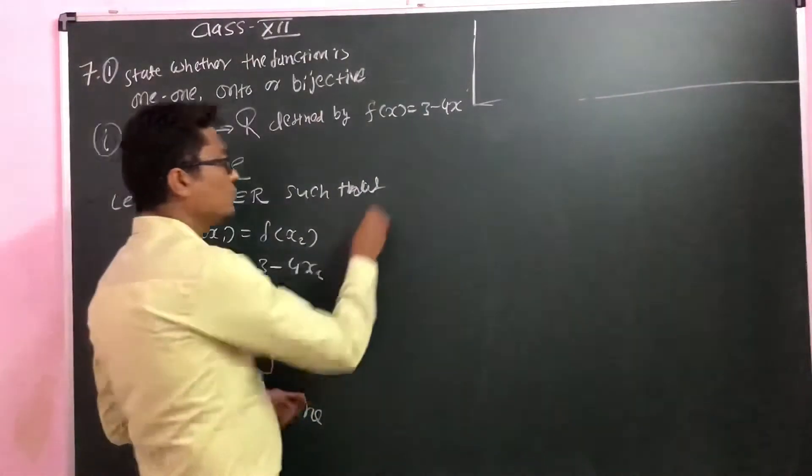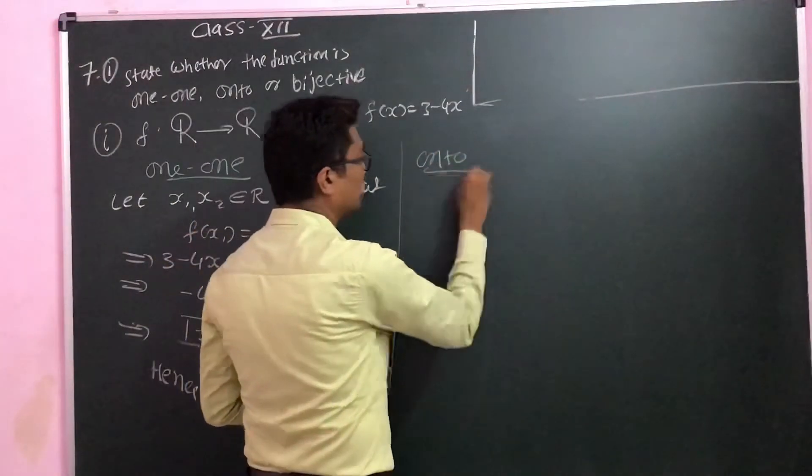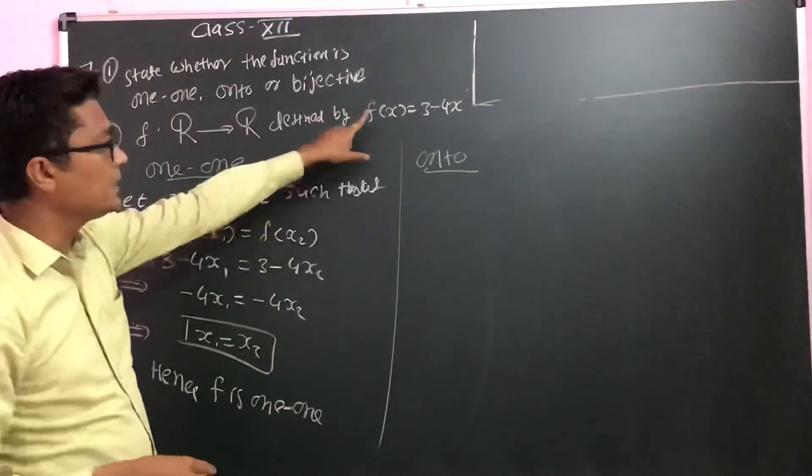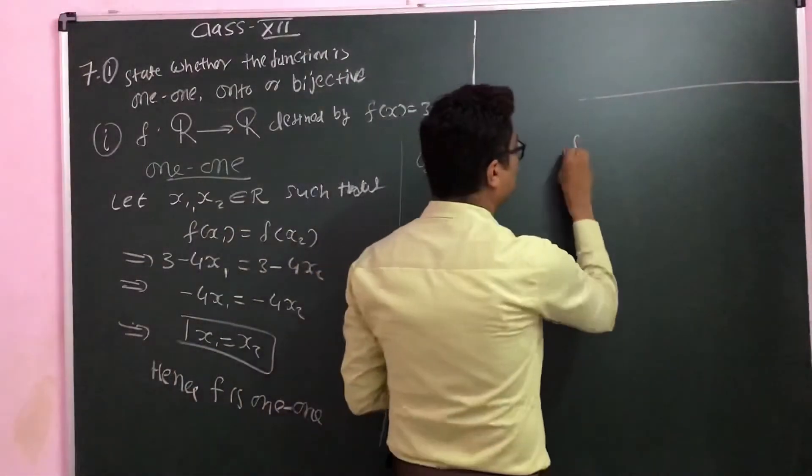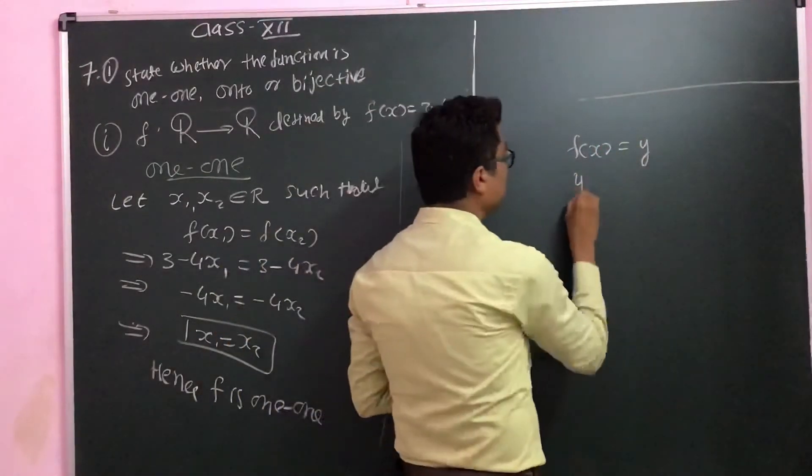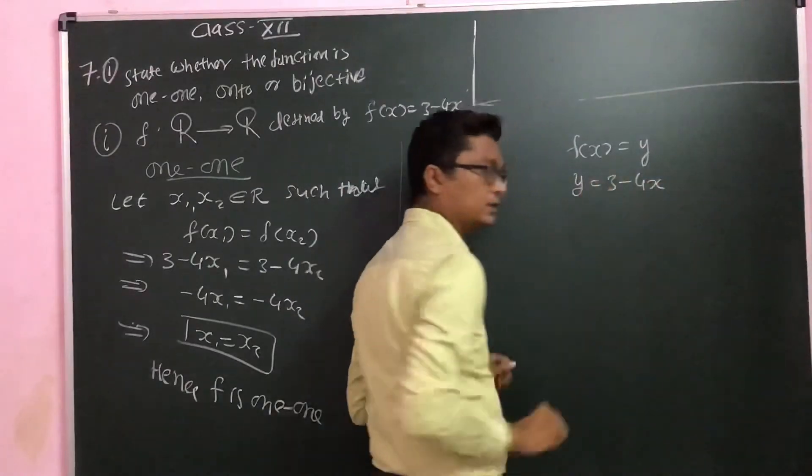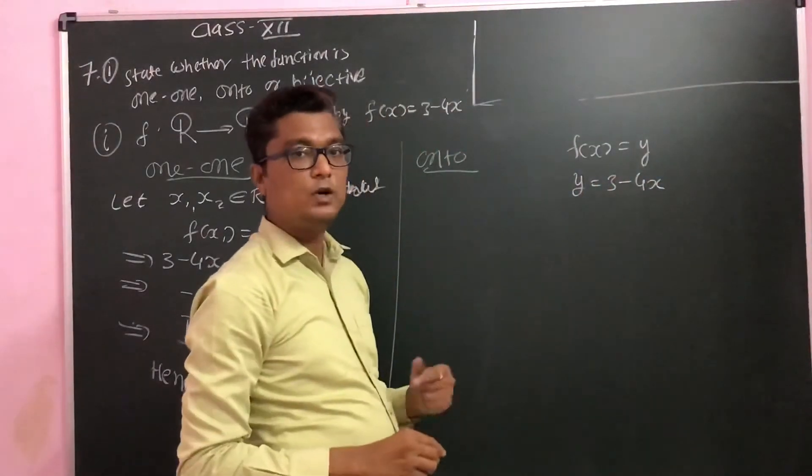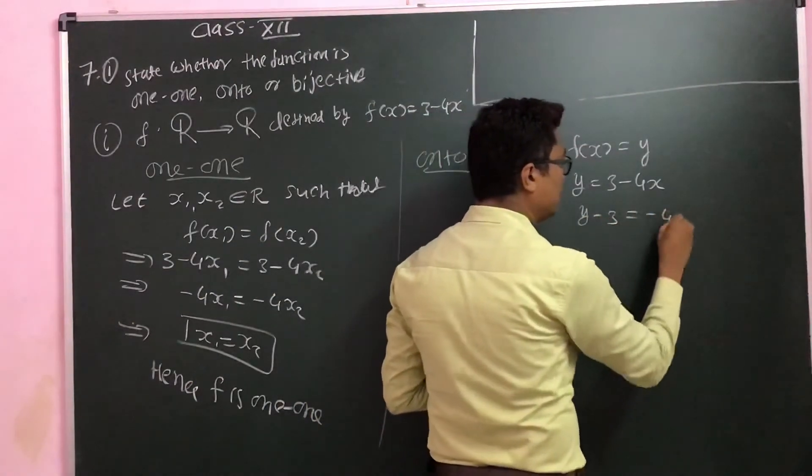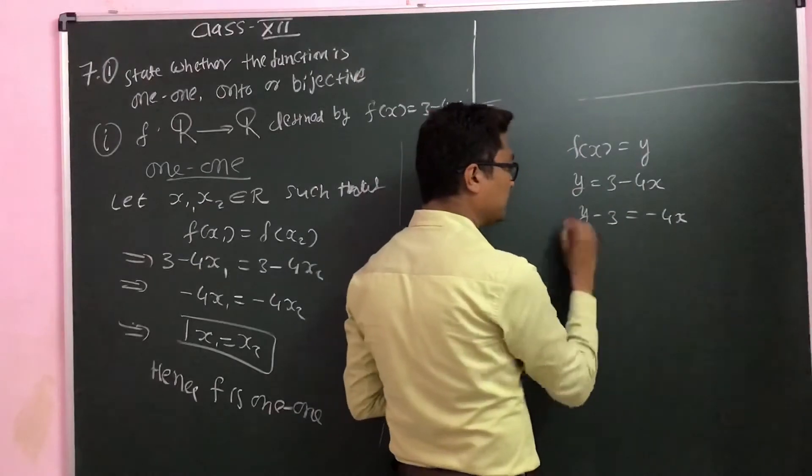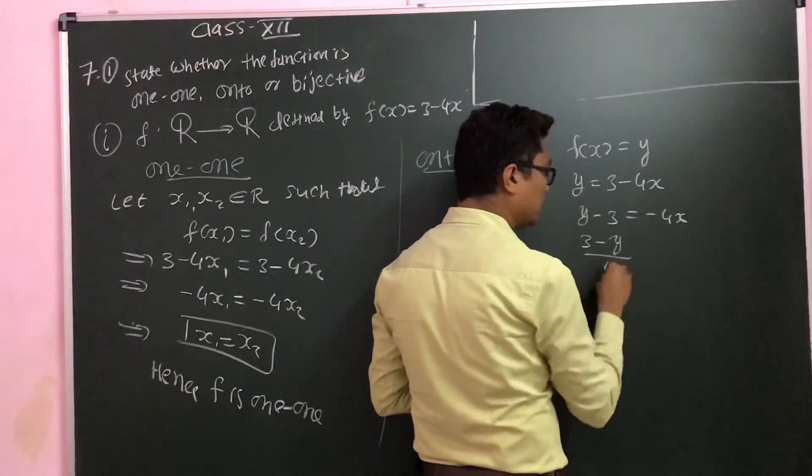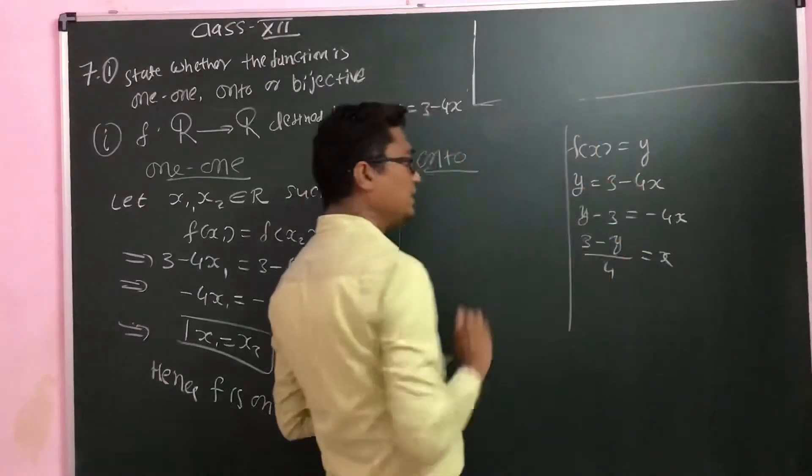Now we are going to do it for onto. If you consider an onto function, then f(x), so y can be given as 3 minus 4x. If I want to make x the subject, then y minus 3 equals minus 4x, so (3 minus y)/4 equals x. We need this.